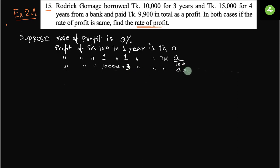So we have to put a into 10,000 into 3, so here is 100. If we simplify, both zeros gone, there is a into 300 equals to taka 300a.